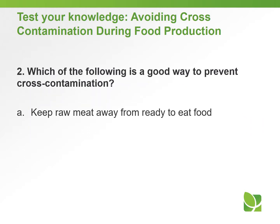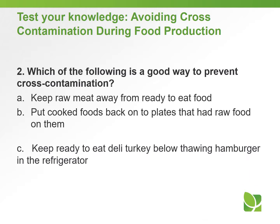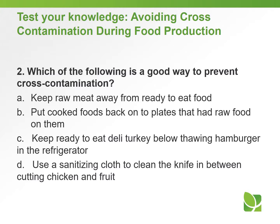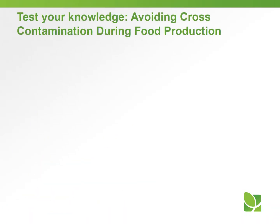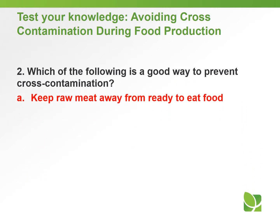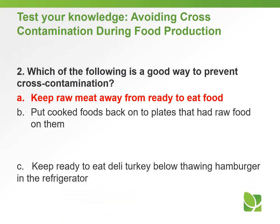Question number two: Which of the following is a good way to prevent cross-contamination? A) Keep raw meat away from ready-to-eat food. B) Put cooked foods back onto plates that had raw food on them. C) Keep ready-to-eat deli turkey below thawing hamburger in the refrigerator. D) Use the sanitizing cloth to clean the knife between cutting chicken and fruit. Answer: A — keep raw meat away from ready-to-eat food.